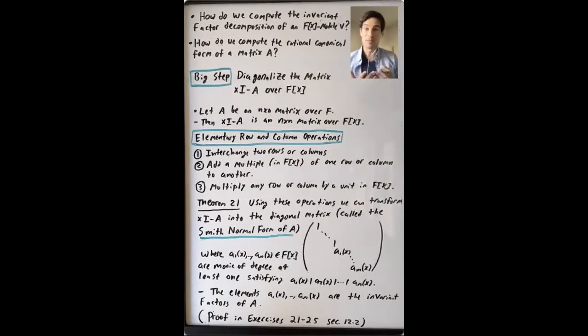So if you're given a vector space V and a linear transformation on that vector space, how do you compute this invariant factor decomposition?